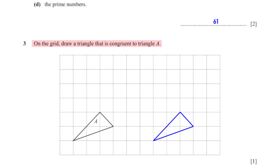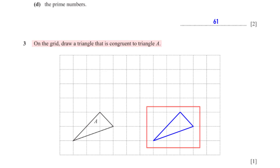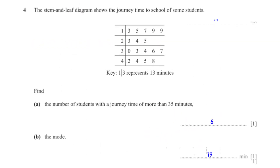On the grid, draw a triangle that is congruent to triangle A. A triangle congruent to triangle A would have the same shape and size as triangle A. On the grid we've drawn a triangle congruent to triangle A.